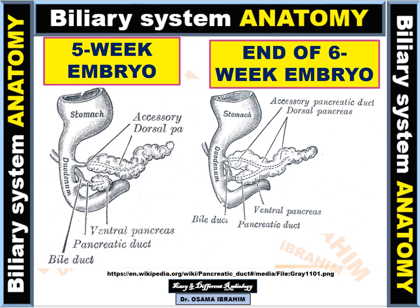I will talk a little about embryology to understand some expressions. At five weeks of embryology, there are two pancreatic buds — one dorsal and one ventral. The dorsal bud has a duct called the accessory dorsal pancreatic duct, which opens within the second part of the duodenum. The ventral pancreatic segment has another duct — the main duct — which opens at the major papilla in the second part of the duodenum after joining with the common bile duct.